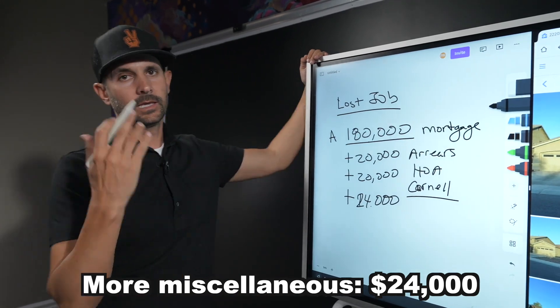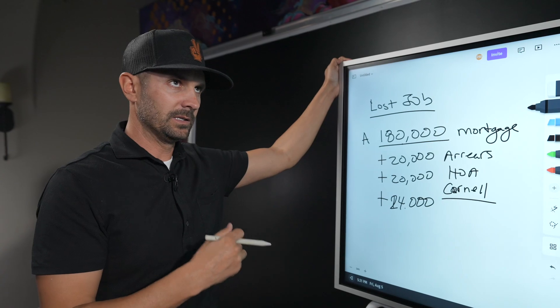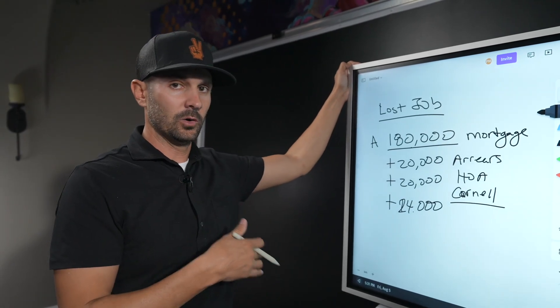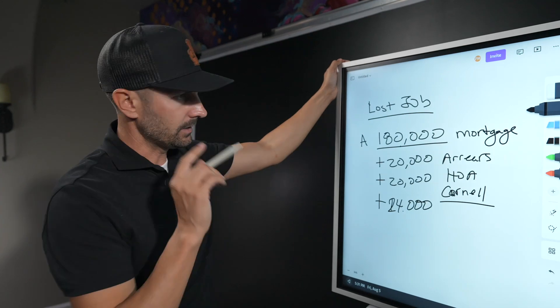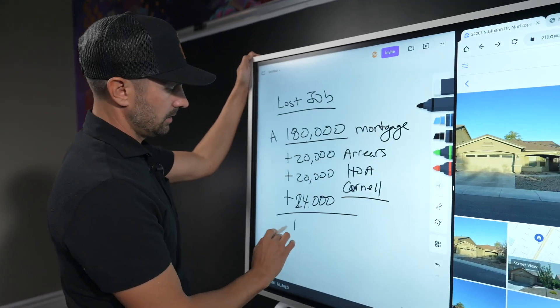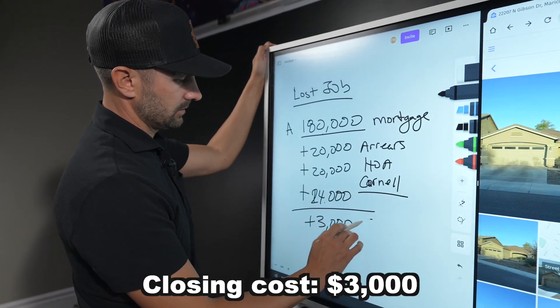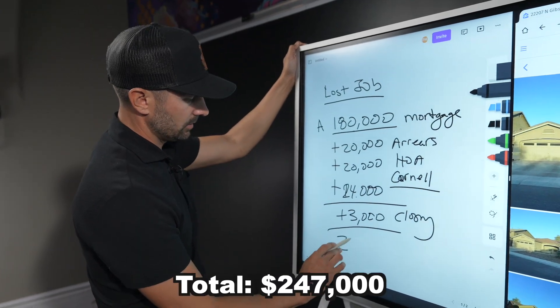We gave Mr. Cornell some cash and then we paid another about $24,000 in other miscellaneous things like we helped him get into an apartment, paid for moving expenses, got pizza and some Diet Coke. Our total purchase price plus closing costs, $3,000 in closing costs, turned out to be $247,000.